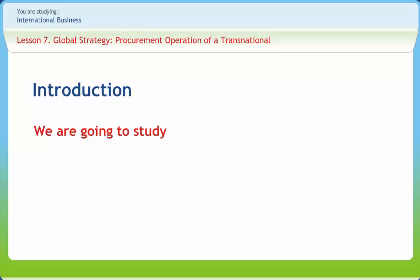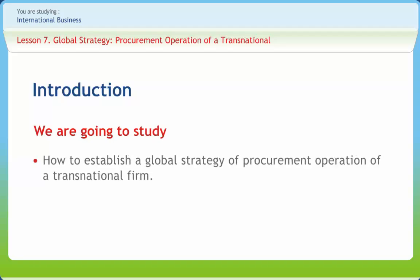The business system involves the integration and management of diverse activities. A supply chain consists of all parties involved directly or indirectly in fulfilling a customer's request. The supply chain includes not only manufacturers and suppliers but also transporters, warehouse retailers and even customers themselves. The goal of a supply chain should be to maximize overall supply chain profitability. In this lesson we are going to study how to establish a global strategy of procurement operations of a transnational firm.